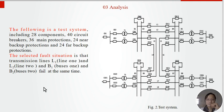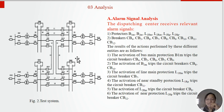Part 3: Analysis. The following is a test system including 28 components, 40 circuit breakers, 36 main protections, 24 near-backup protections, and 24 far-backup protections. The selected situation is that transmission line 1, line 2, and buses 1 and buses 2 fail at the same time. This is the alarm signal analysis. The dispatching center received relevant alarm signals as shown.